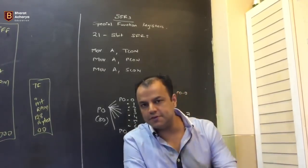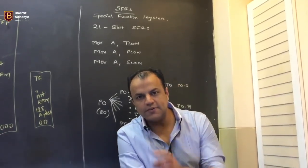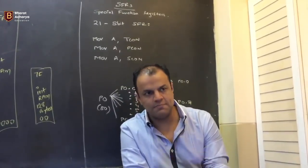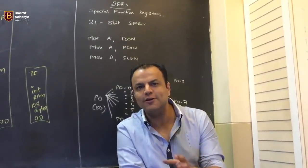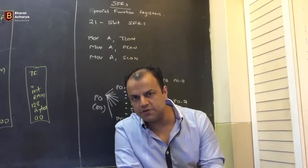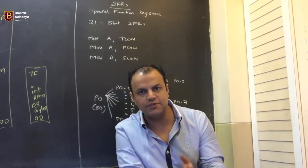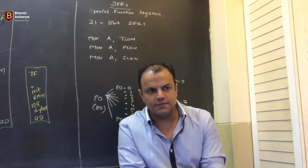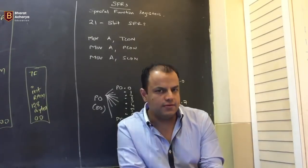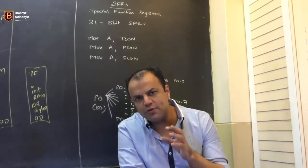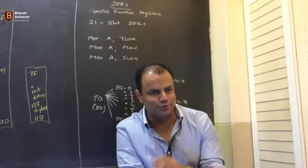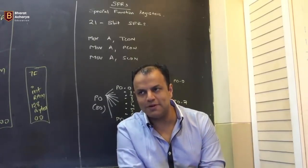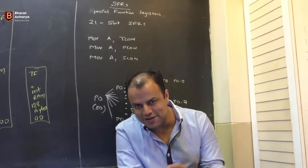SFRs are different from the general registers. There are R0 to R7 — 8 registers in one bank. There are 4 banks, so there are 32 general purpose registers — R0 to R7, four times. They are used by the programmer just for storing ordinary values. They are the tools used for programming, so they are called general purpose.